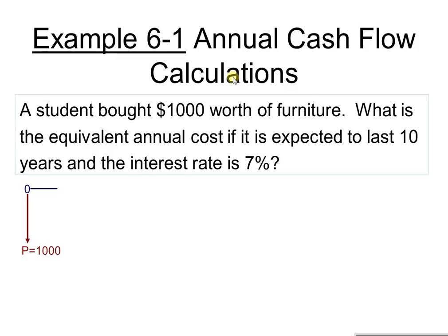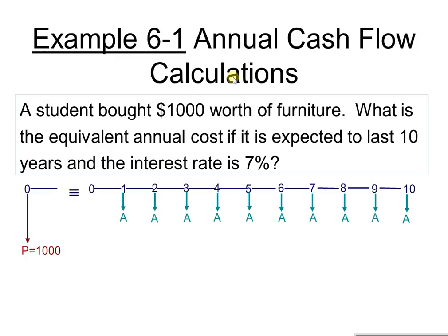What we want to do is find the equivalent annual cost. This present amount needs to be split up into an equivalent uniform series. This cash flow diagram shows the equivalent annual cost — arrows pointing down at the end of every year, from year one through year 10. So we want to find A, the uniform annual amount, that is equivalent to P. We set up the equation: find A given P.